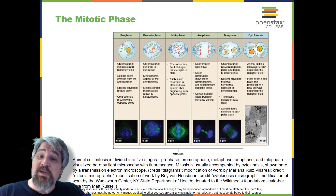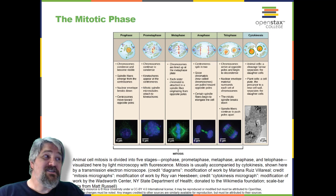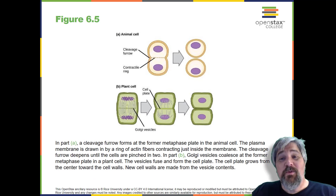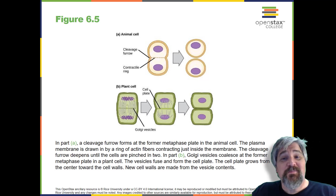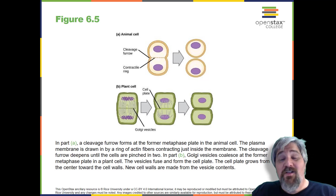Cytokinesis is the second part of the mitotic phase during which cell division is completed by the physical separation of the cytoplasmic components into two daughter cells. Although the stages of mitosis are similar for most eukaryotes, the process of cytokinesis is quite different for eukaryotes that have cell walls, such as plant cells. In cells such as animal cells that lack cell walls, cytokinesis begins following the onset of anaphase. A contractile ring composed of actin filaments forms just inside the plasma membrane at the former metaphase plate. The actin filaments pull the equator of the cell inward, forming a fissure called the cleavage furrow. The furrow deepens as the actin ring contracts, and eventually the membrane and cell are cleaved in two.